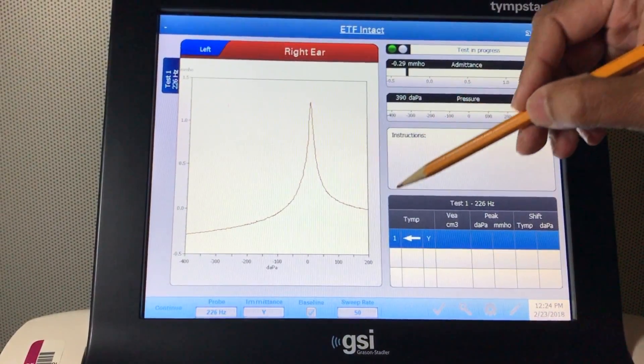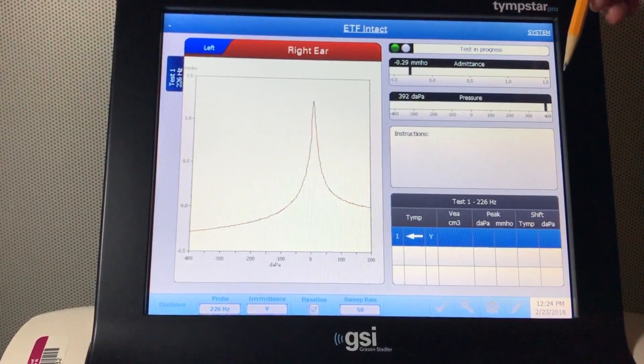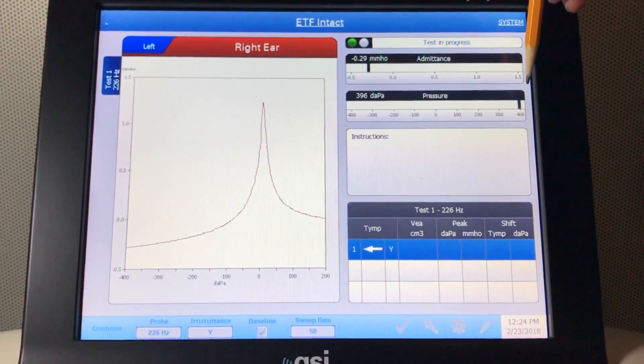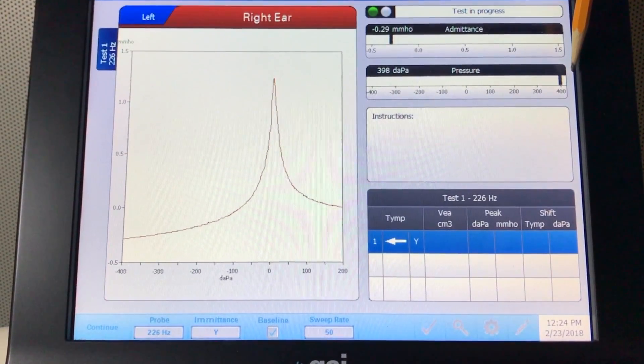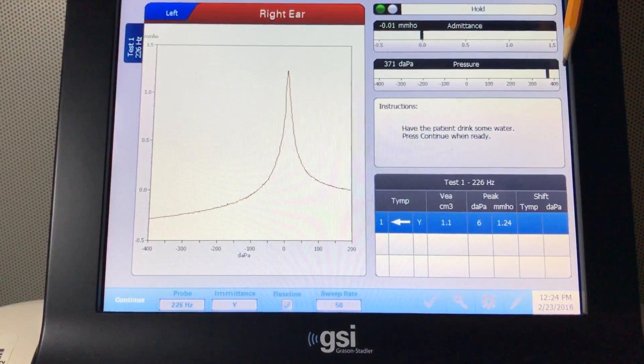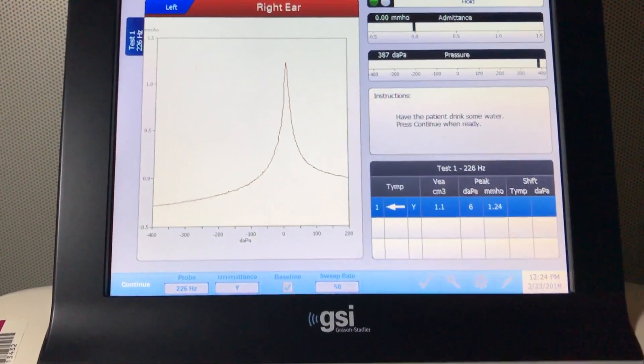Once you get the baseline tympanogram, the next thing the instrument does is it creates a positive 400 decapascal pressure in the patient's ear. Once the pressure is established, you have the patient drink some water.